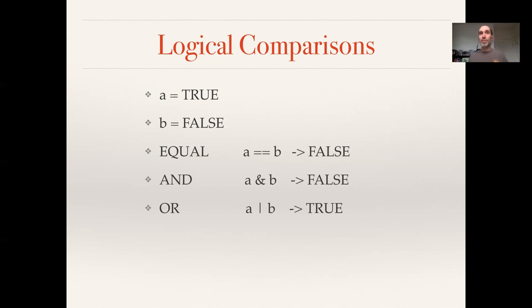I could ask if either one of them is true. That uses this pipe, this vertical line character, we often call it a pipe, to ask whether A is true or B is true. That one's a little less intuitive, but you'll get used to that syntax.